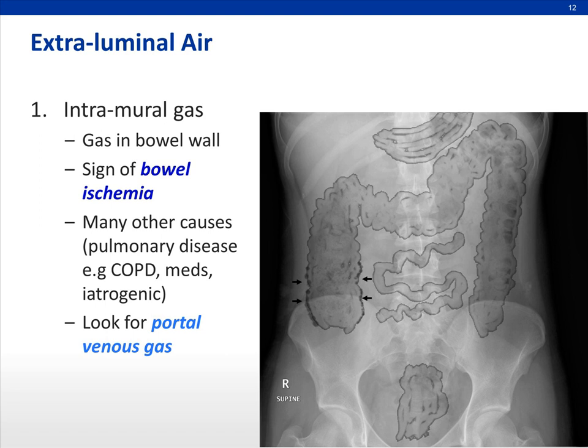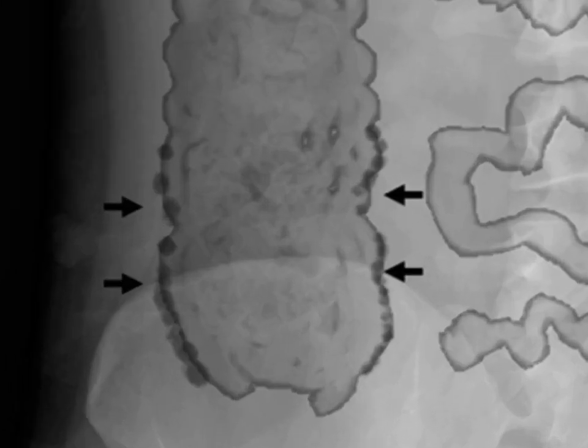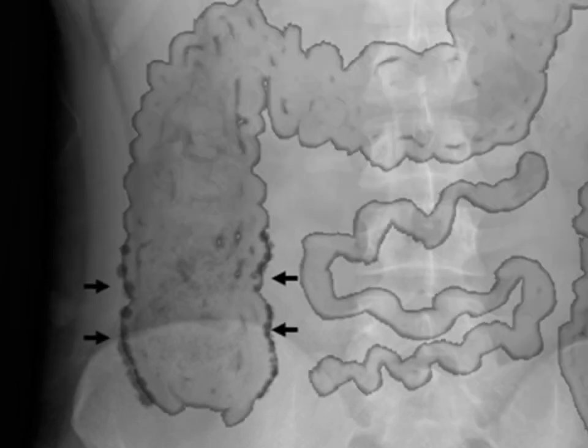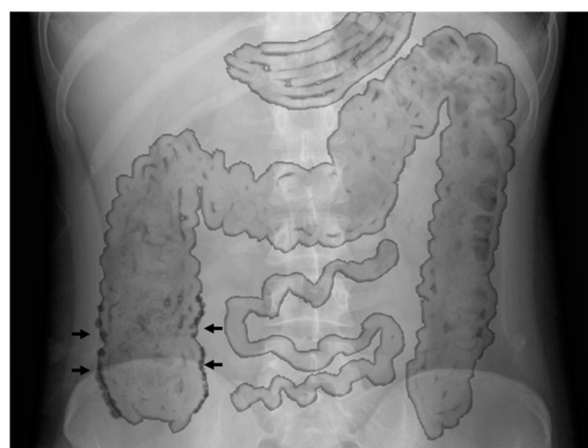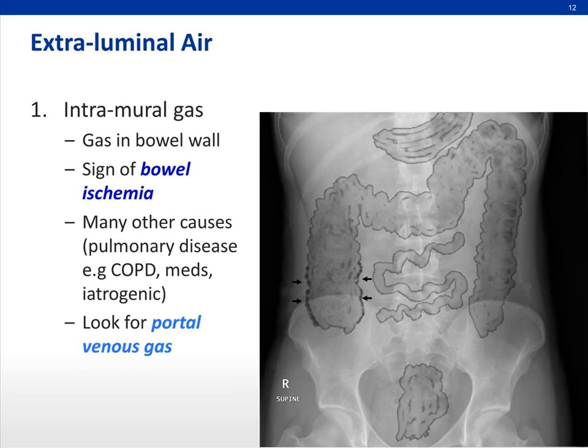The first type of extra-luminal air is gas in the bowel wall — intramural gas. These are mural gas lucencies within the bowel wall and are a sign of bowel ischemia. If we find them and suspect bowel ischemia, we look at the liver for portal venous gas, which is another sign of bowel ischemia. Of course, if the patient is asymptomatic and walking around, there are many other causes of intramural gas.